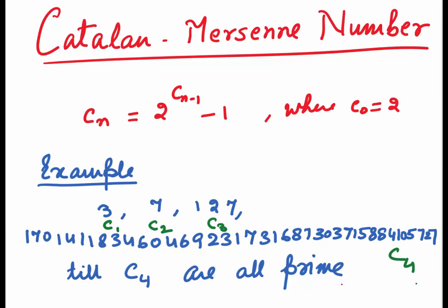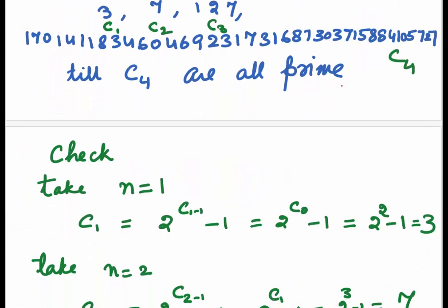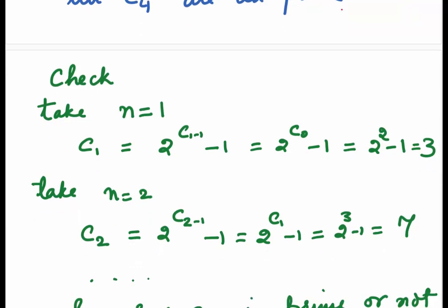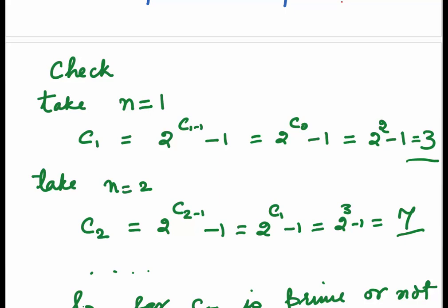Catalan mentioned that all such numbers are prime. Let's look at them. If we take n to be 1 in the formula, we get c1 = 2^(c0) - 1. c0 we have taken as 2. This gives us c1 = 3. If you take n = 2, we will get c2 = 2^(c1) - 1. Substitute c1 is 3, we will get c2 as 7. And when we take n to be 3, we get c3 which is 127. When we take n to be 4, we will get c4.